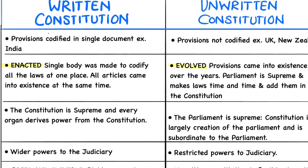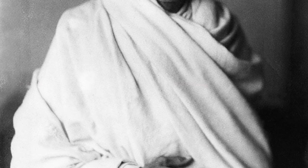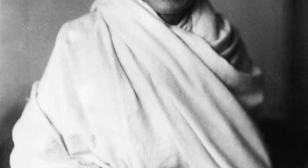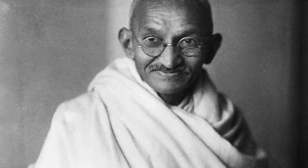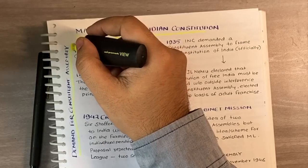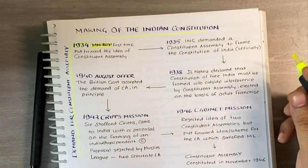Let us discuss the demand for constituent assembly. As early as 1922, Mahatma Gandhi put forward the idea that India's political destiny should be determined by the Indians themselves and not by any other foreign body. In 1934, M.N. Roy, the hardcore communist, put forward the idea of a constituent assembly.